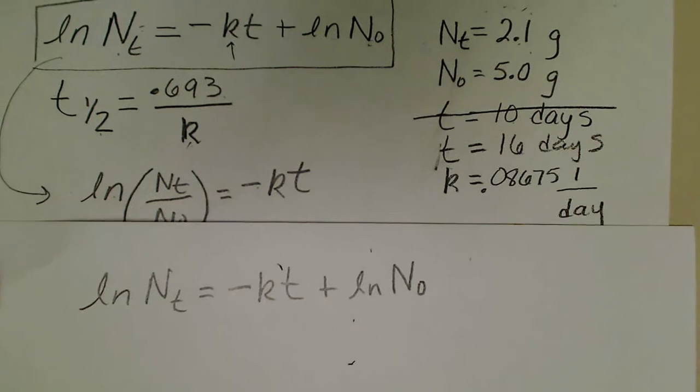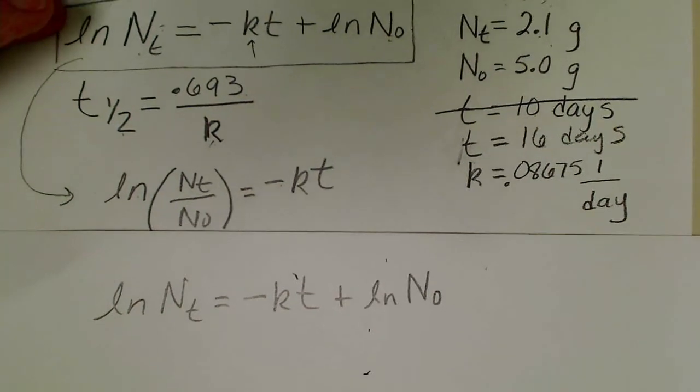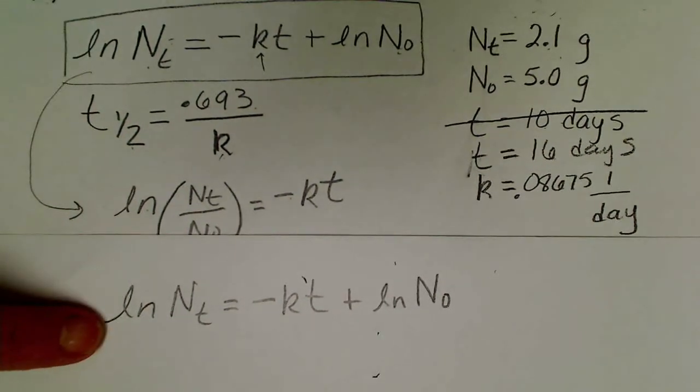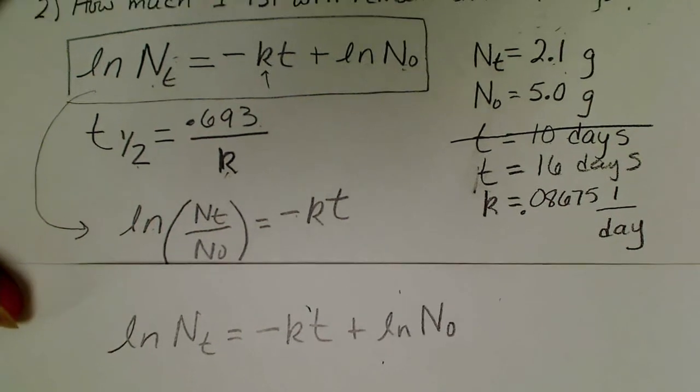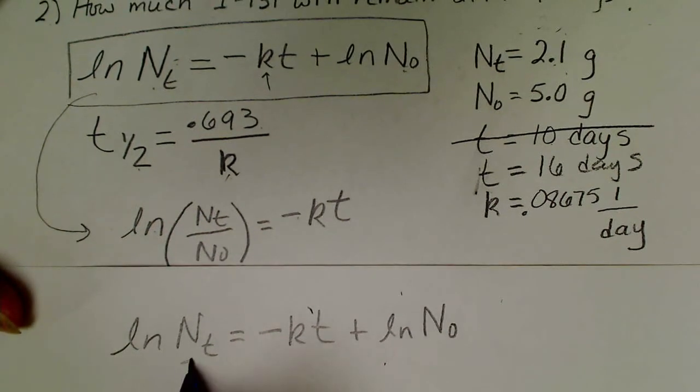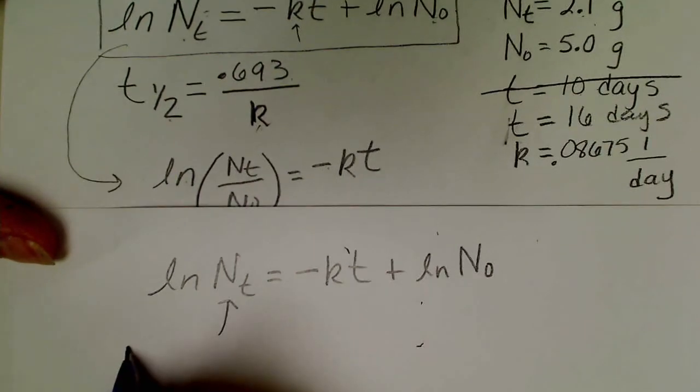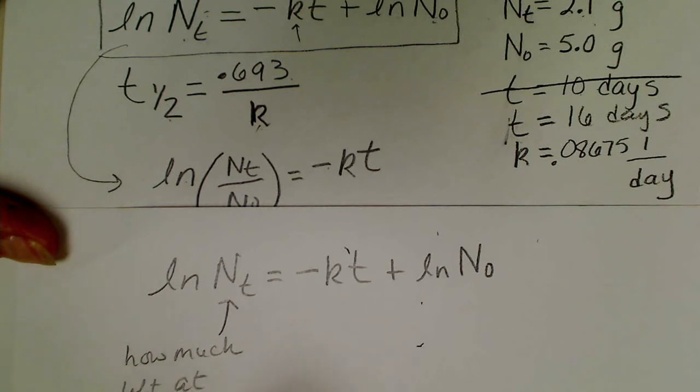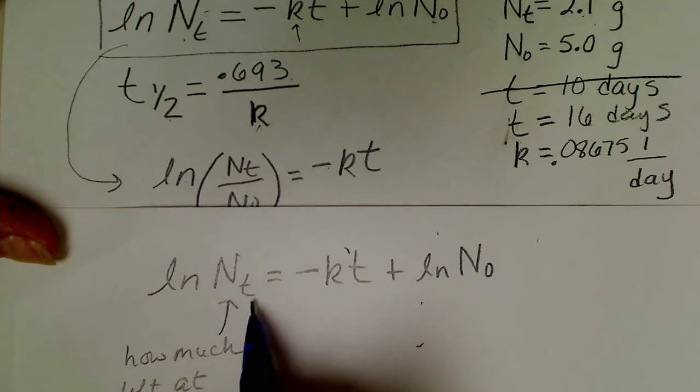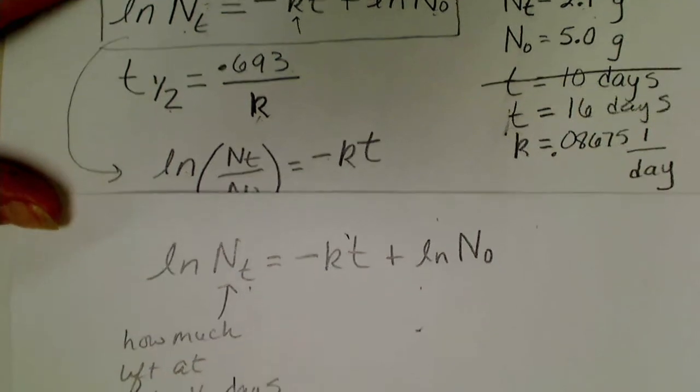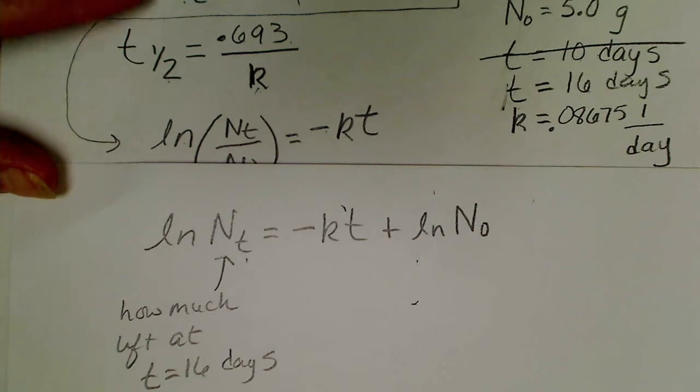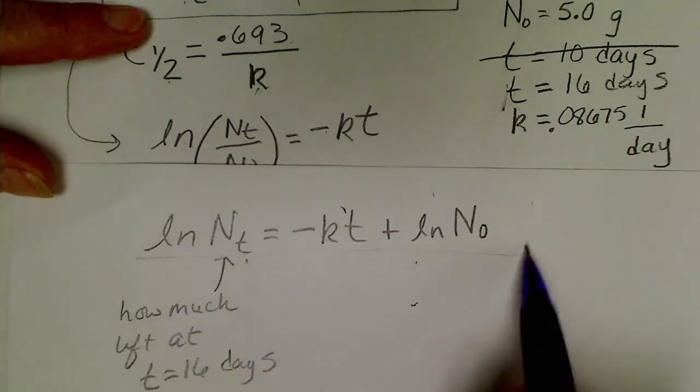I'm going to use that data and plug those values into this equation. Now we are looking for this value here, the amount that remains at t equals 16 days. The subscript t is here so for any particular time t this equation is always going to work.